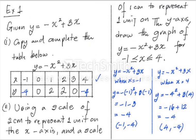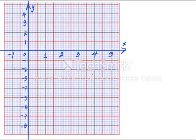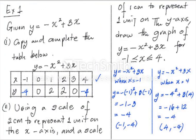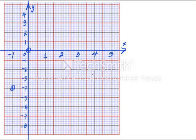Now let's plot our points. The first point is (-1, -4): move to x = -1 on the vertical axis, then y = -4 on the horizontal. Then (0, 0) which is the origin. Then (1, 2) and (2, 2), followed by (3, 0) and finally (4, -4). We now have all the points necessary to draw the graph.